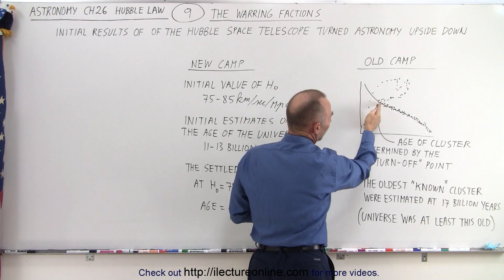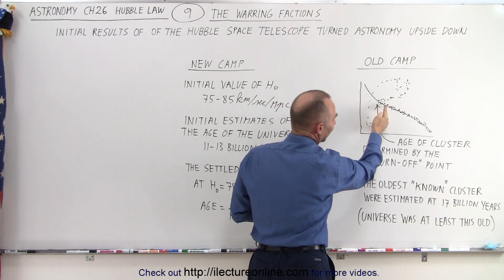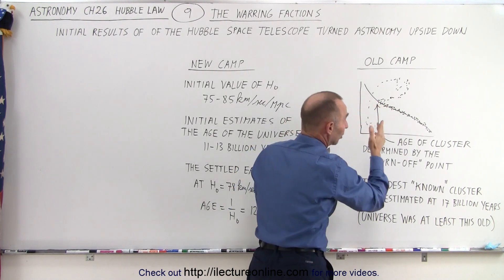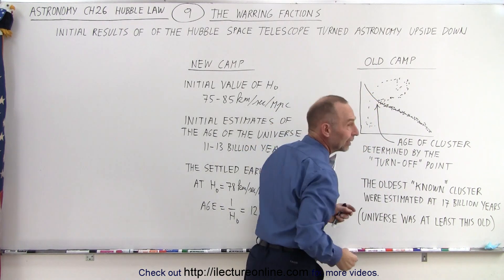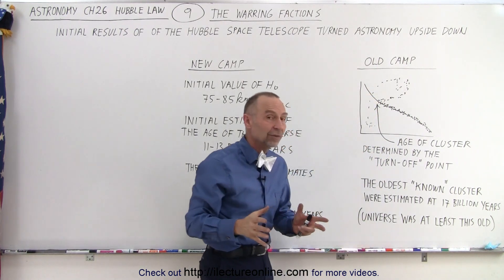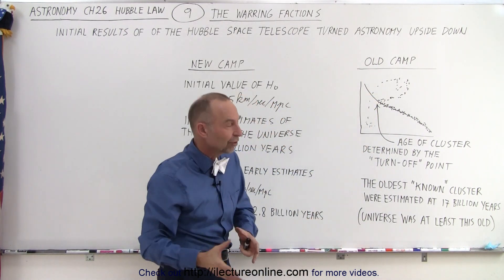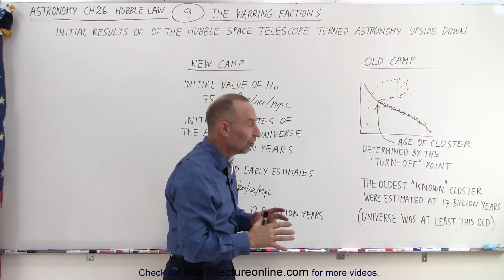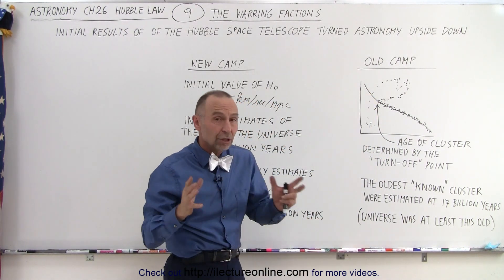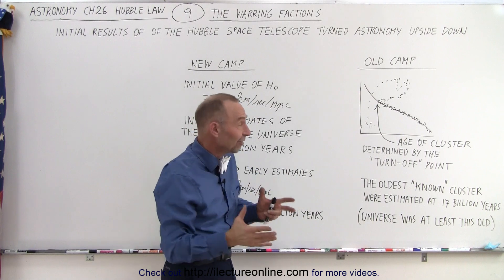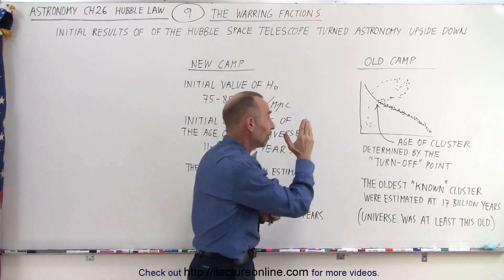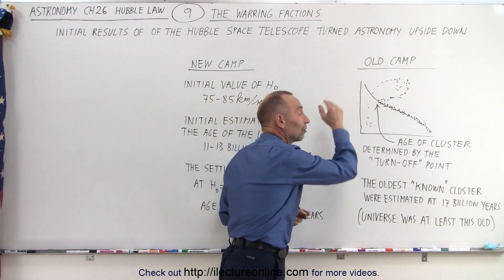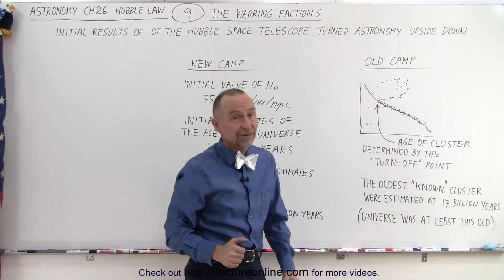If the turnoff point is further down the main sequence, the cluster is older. If the turnoff point is higher up on the main sequence, then the cluster is younger. So we're able to come up with a pretty good estimate for the age of clusters based upon where that turnoff point is.